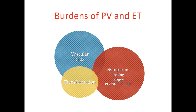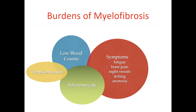You're going to get a nice talk on the symptoms that come with PV and ET — risks for clotting, symptoms including itching, fatigue, and erythromyalgia, which is a skin and extremity pain that can be really significant. Once you start treatment, you take on treatment side effects. Everything is a balance: what's due to my disease versus what's due to my treatment? Myelofibrosis also has similar things — treatment side effects, splenomegaly. The symptoms can be worse in myelofibrosis, and there are day-to-day symptoms like night sweats, bleeding, and pain.